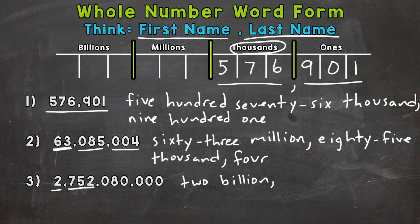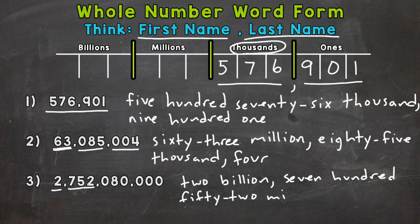We read this as is. So 752, seven hundred fifty-two would be the first name. Last name, it's sitting in the millions period. So seven hundred fifty-two million, comma.